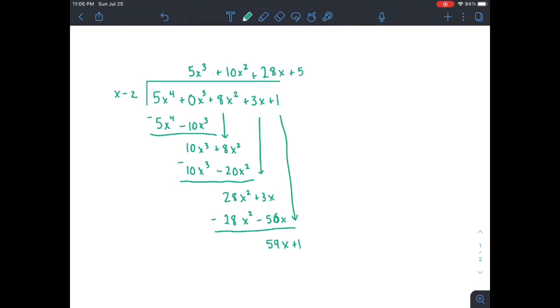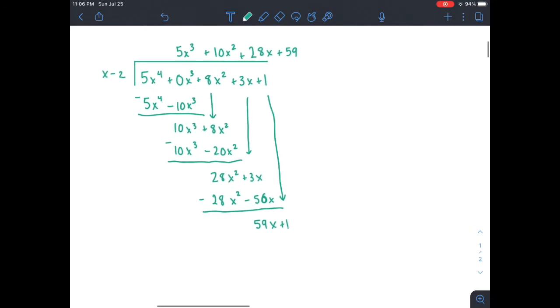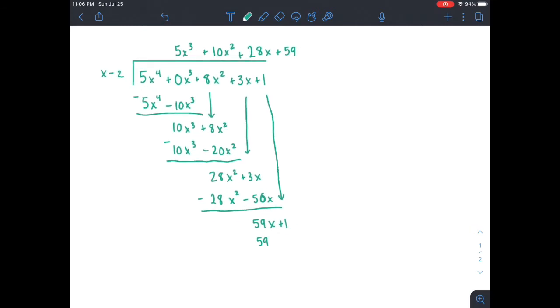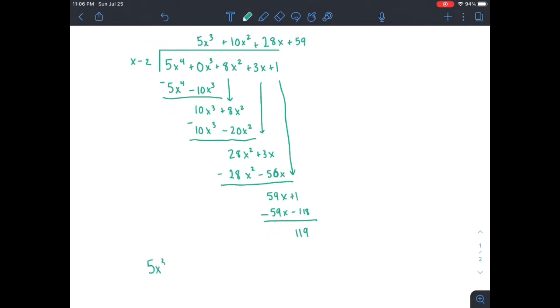And for the final time, that just goes in 59x. And we distribute. So our answer is 5x cubed plus 10x squared plus 28x plus 59 with a remainder of 119.